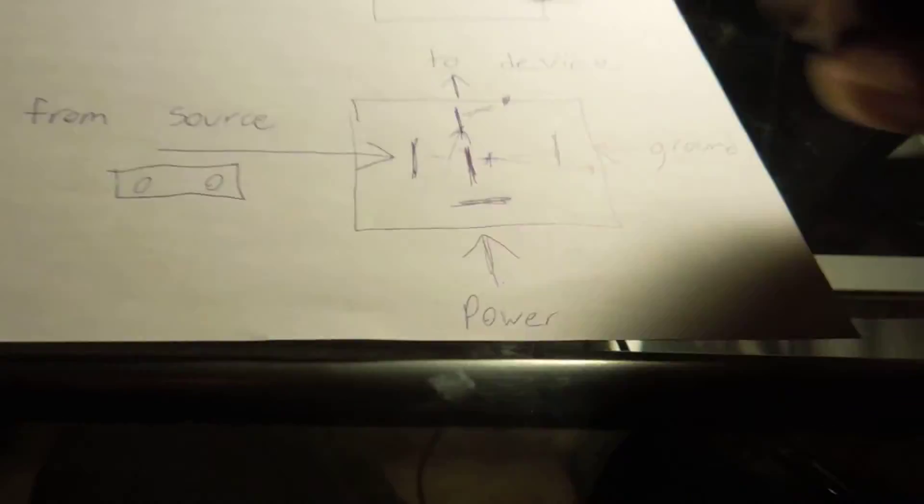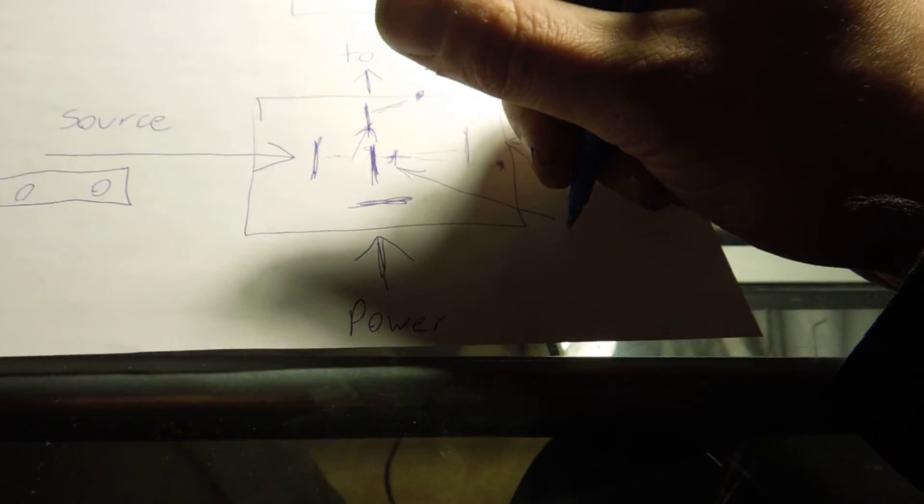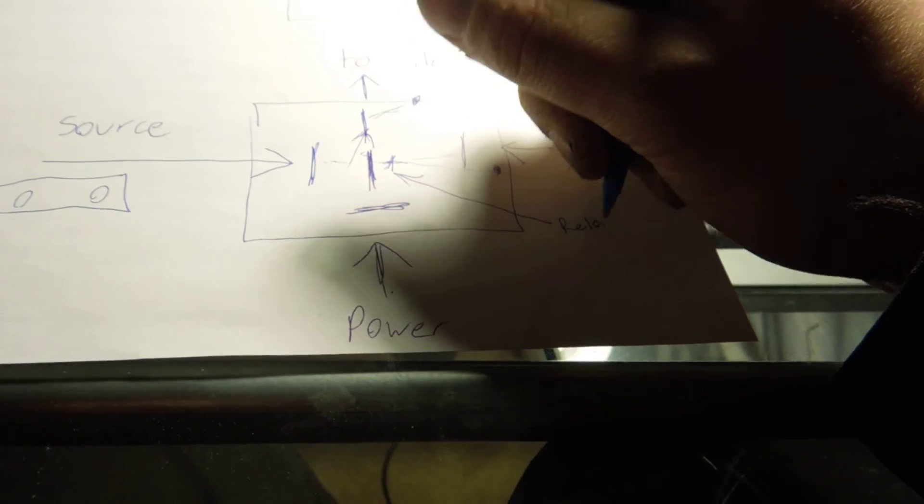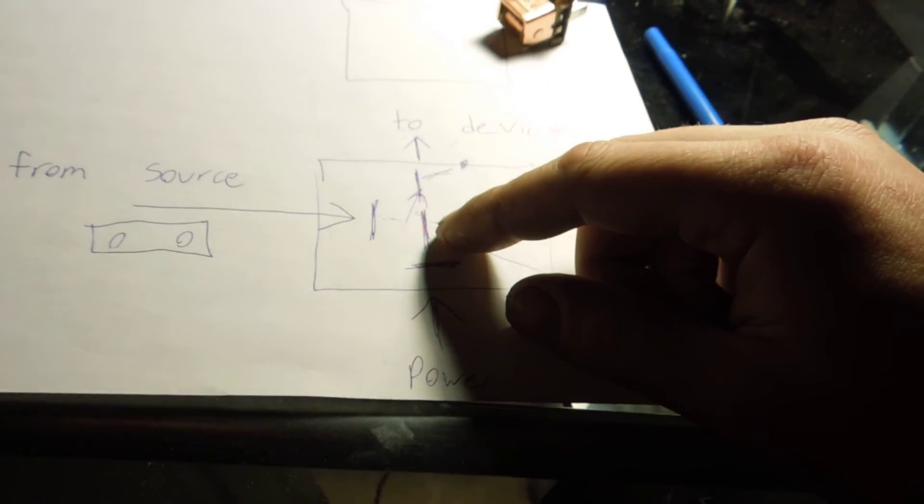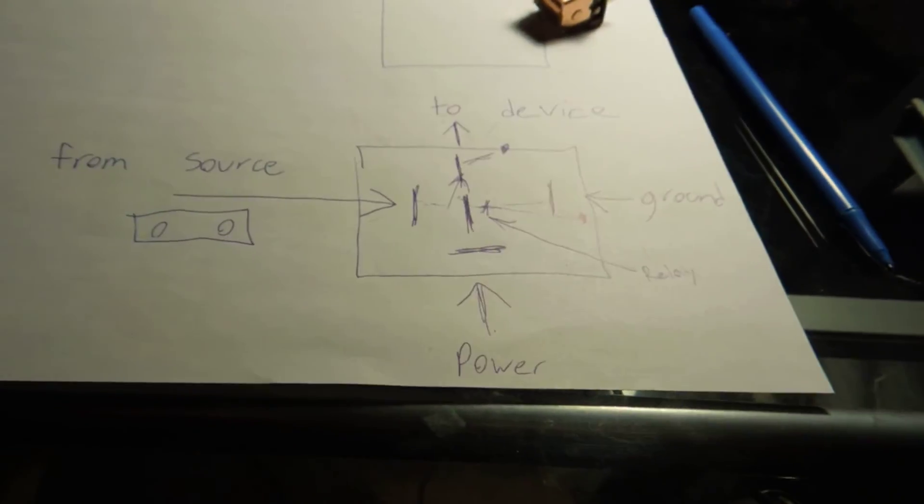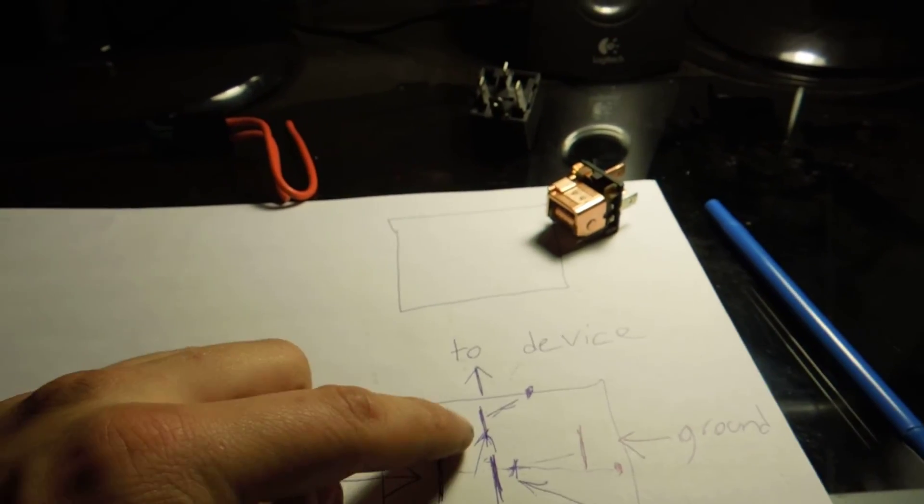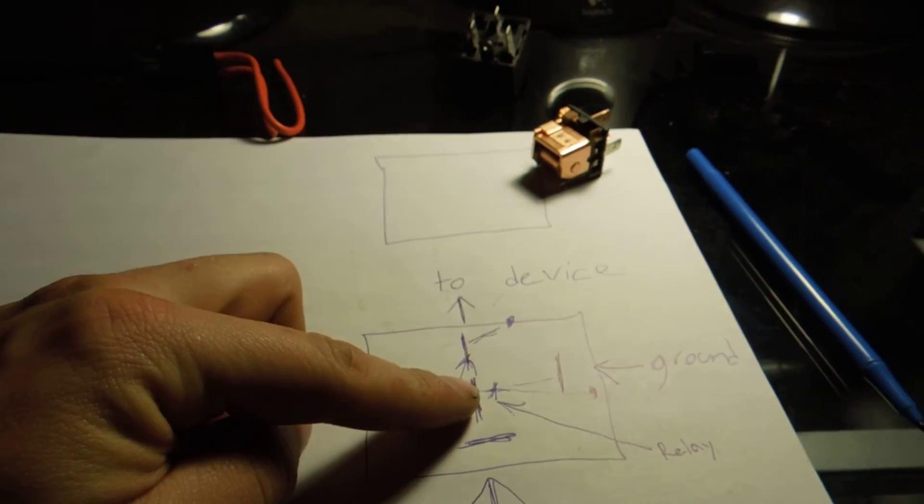And like I said, I think I've pretty much got it here: this center pin will only be working when the relay does not have any power from the source. As soon as it gets power from the source, center pin stops working and this pin starts working. And then when it loses power, or when this device stops sending power or sending ground, this will switch back to here and it'll feed it constantly.